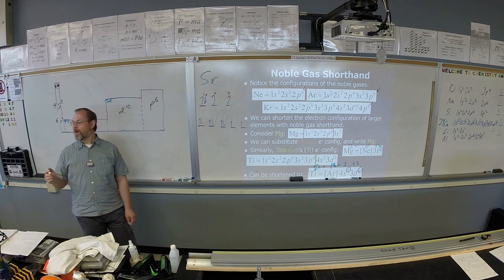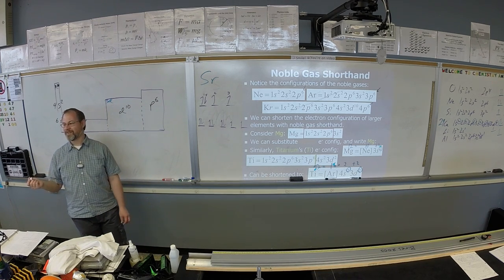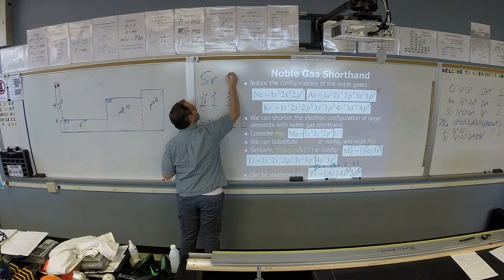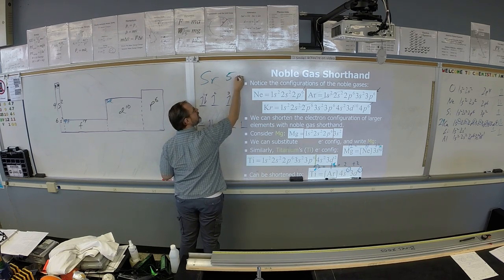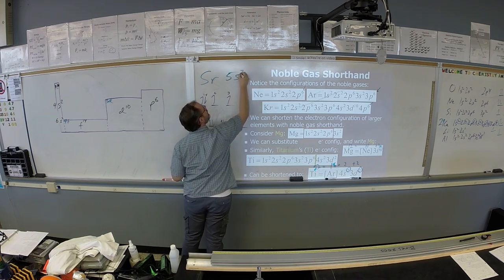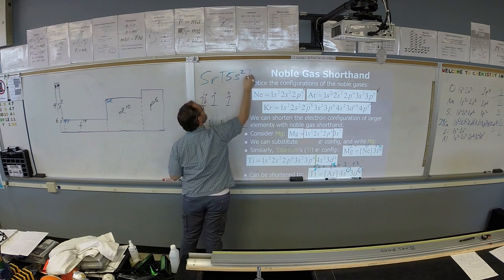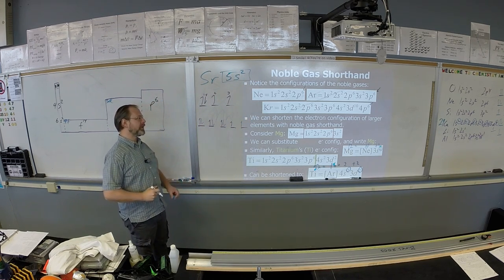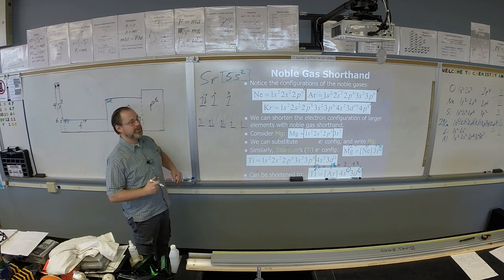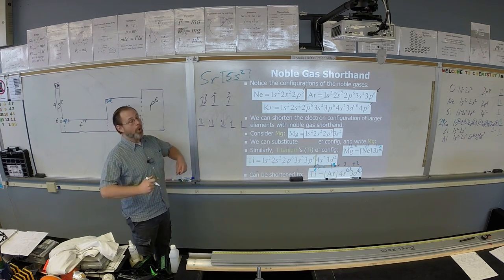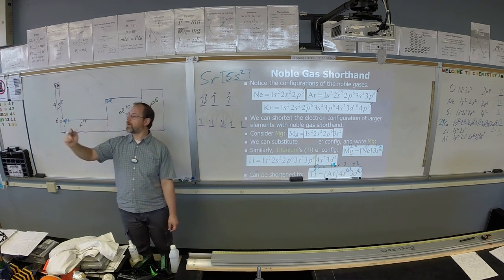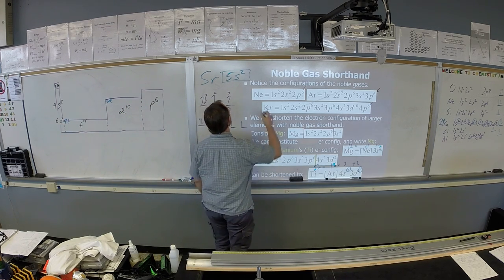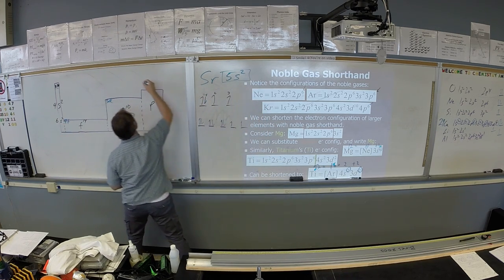So what level is strontium in? Yeah, it's in level five, it's in block s, and how far over? Two. So strontium is going to end 5s2. If you want, we can write 1s2 2s2 2p6 3s2 3p6 4s2 3d10 4p6 5s2, or we can look at strontium and look at the noble gas right before it, krypton. So instead of writing all that stuff, let's just write krypton 5s2.